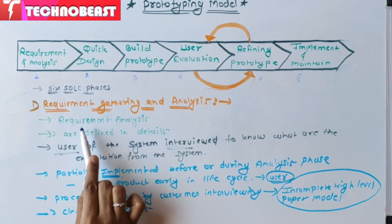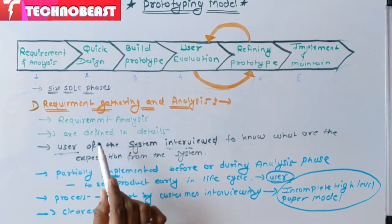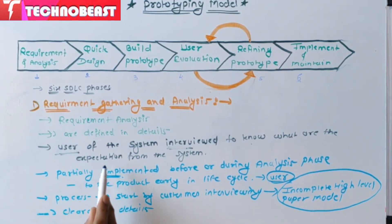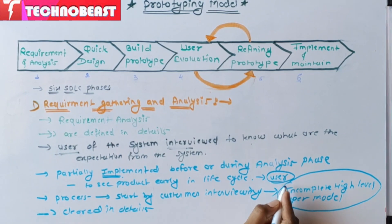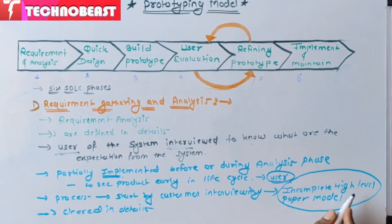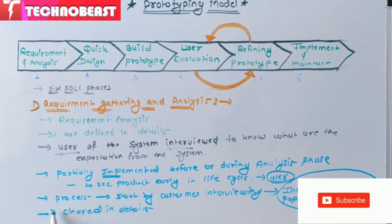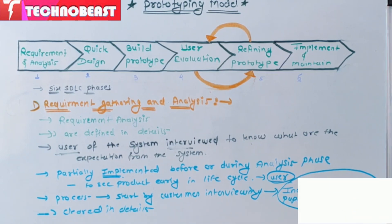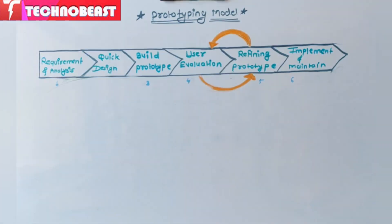So to summarize: the prototyping model starts with requirement analysis. In this phase, the requirements of the system are defined in detail. During this process, the user of the system is interviewed to know about their expectations. The system is partially implemented before or during the analysis phase for the user to see the product early in the life cycle. This process starts with interviewing the customers and developing an incomplete high-level paper model.